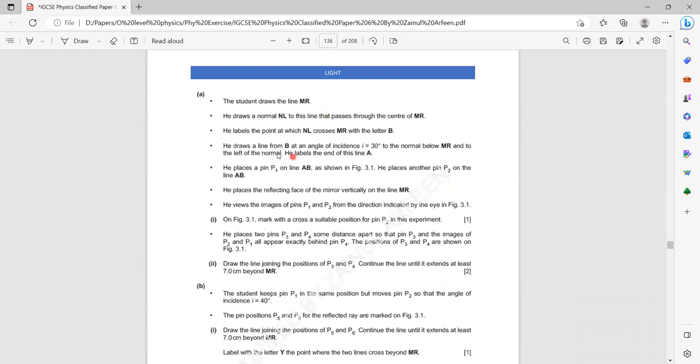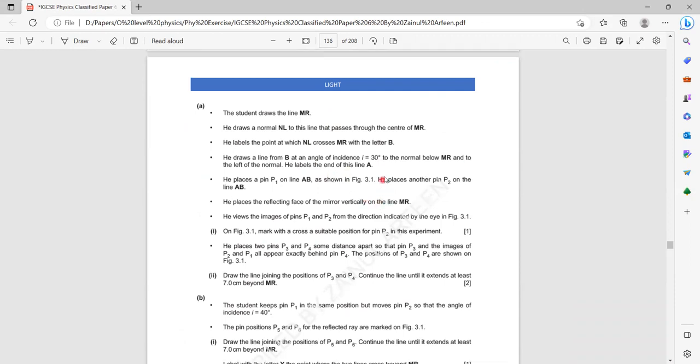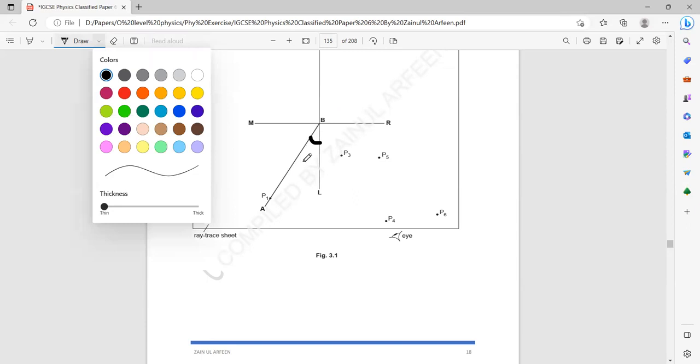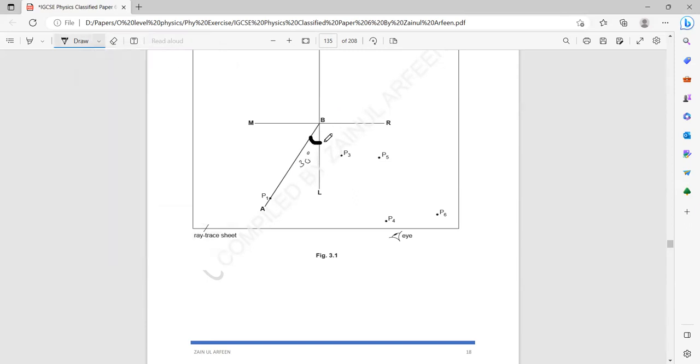Then he draws a line from B at an angle of 30 degrees to the normal and to the left of the normal and he labeled that as A. So you can see he marked a normal, on the left hand side of the normal, he measured the angle as 30. So the angle of incidence here is 30 degrees.